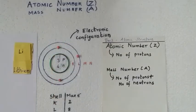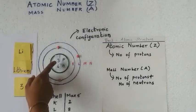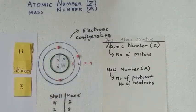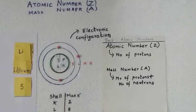The atomic number of lithium is 3, since it has 3 protons — Z equals 3. The mass number is 3 plus 4, which equals 7. So the mass number of lithium is 7. We will move to the next examples in the next videos. Thank you.